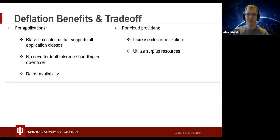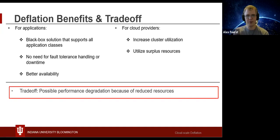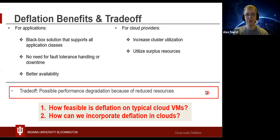Cloud providers will be able to increase cluster utilization and reduce surplus resources, knowing that the cluster can handle a higher load without needing additional hardware. The trade-off lands on applications, as they risk possible performance degradation if their internal utilization exceeds their possibly reduced resources. To show the efficacy of deflation in cloud environments, we need to ask two questions: how amenable are typical cloud VMs to such deflation, and how can deflation be incorporated into existing public clouds?